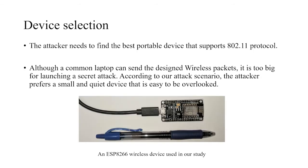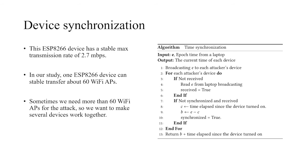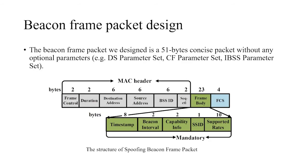The attacker needs to find a portable device. Although a common laptop can send those WiFi packets, it's not easy to hide them. So we choose a device called ESP8266, which is very small and can send all the attack signals we want. Because ESP8266 has a limited capability to send out packets, we may need more than one ESP8266. Therefore we design a time synchronization algorithm to synchronize all those devices, and the attack signal is actually beacon frame packets.